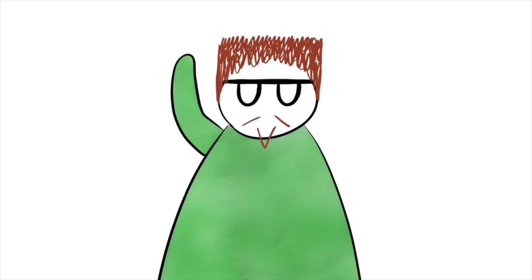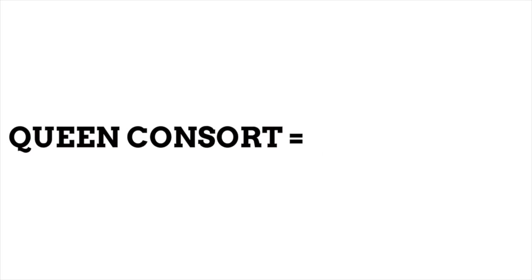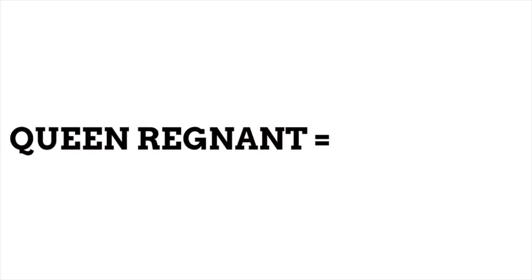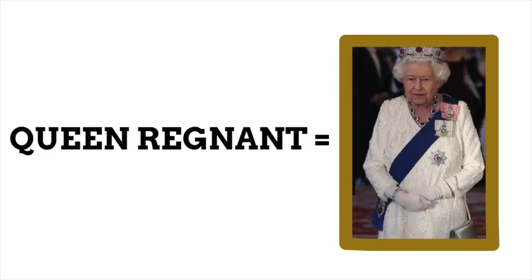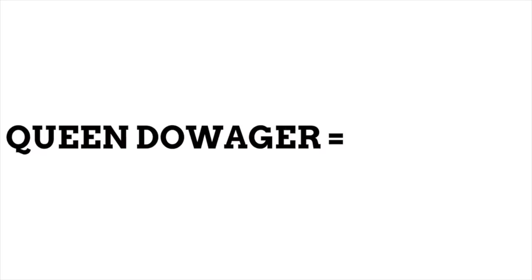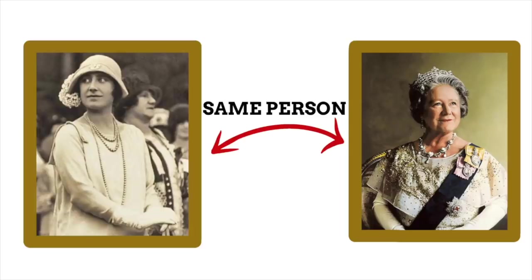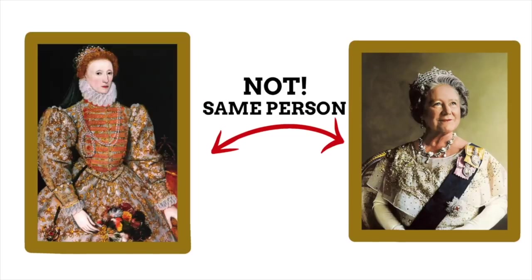When a woman becomes queen through the title being transferred from her husband, she's actually a type of queen called a queen consort. There are three kinds of queen: queen consort, who is married to a king (like King George the Sixth's wife Queen Elizabeth); queen regnant, who reigns in her own right (like our current Queen Elizabeth II); and queen dowager, who is the mother of a reigning monarch — like King George the Sixth's wife Elizabeth, who in her later life became known as the Queen Mother. This means that Queen Elizabeth was both a queen consort and a queen dowager in her life.